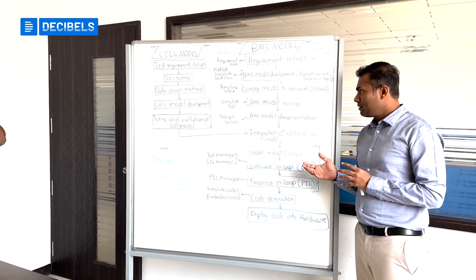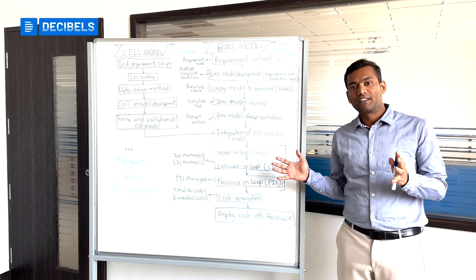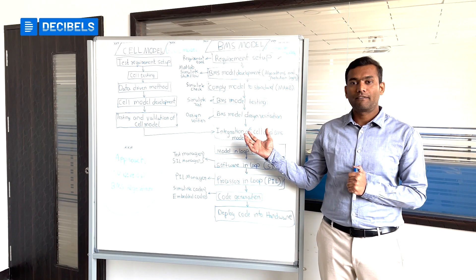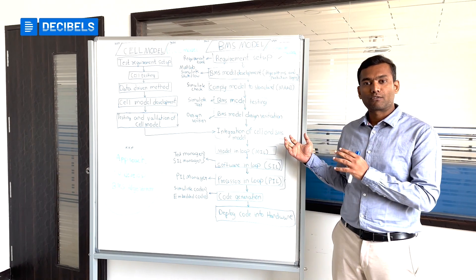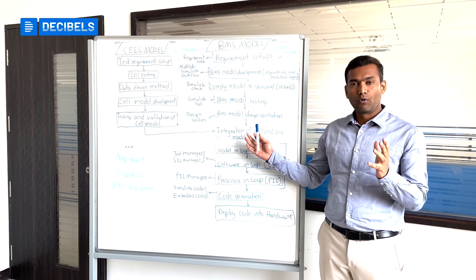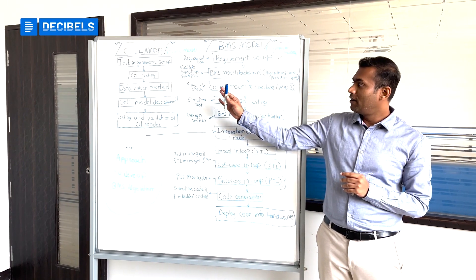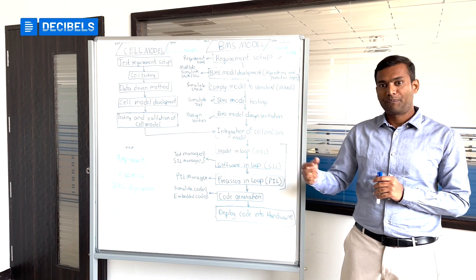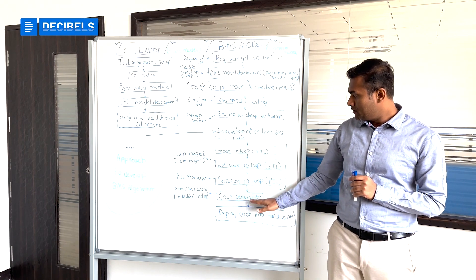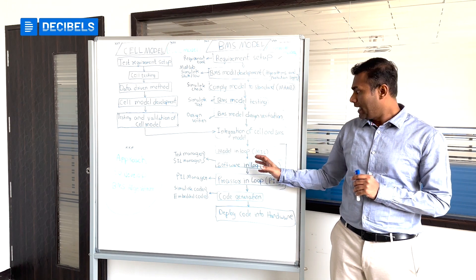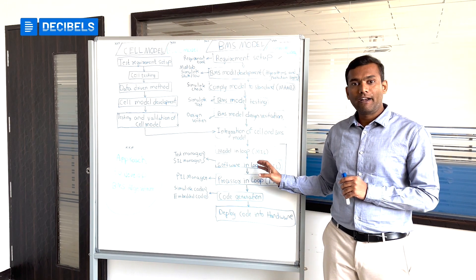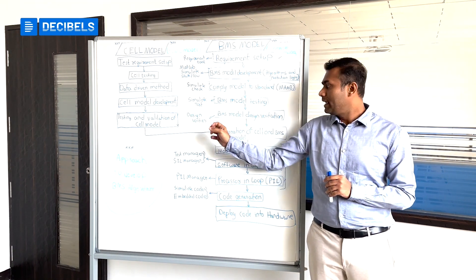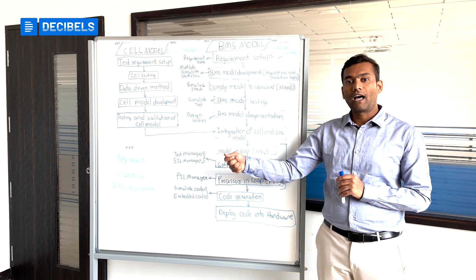Thank you very much Krishna for giving us a great run-through about how exactly this course has been developed. If you see, it is a holistic approach that we have utilized in creating this course. To recap, we started by creating the plant model first. The plant model — we can also call it the digital twin of the cell — because if there is any generated code from this whole process that needs to be verified or tested correctly, we need to have the digital twin.